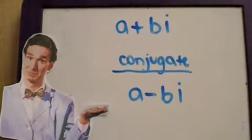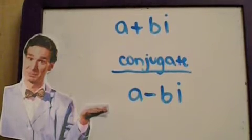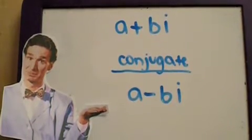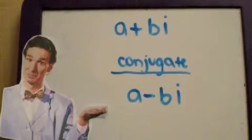Every complex number has a conjugate. If you have a plus bi, then the conjugate of this complex number would be a minus bi. The conjugate makes it easier to work with i when solving a math problem.